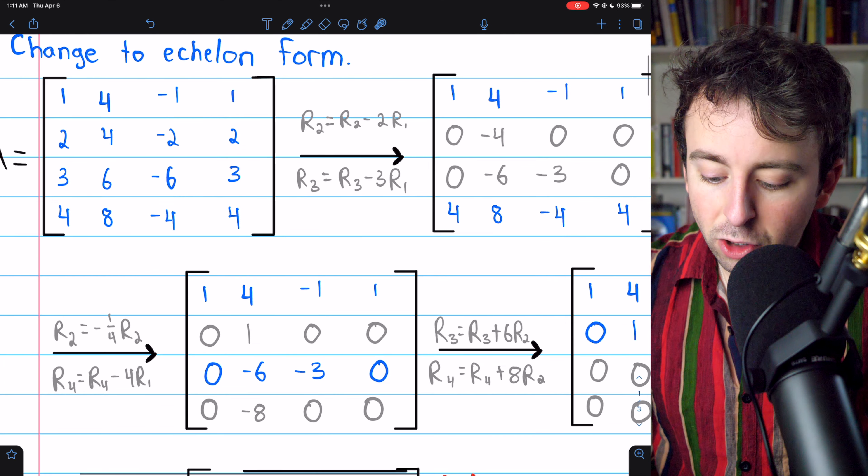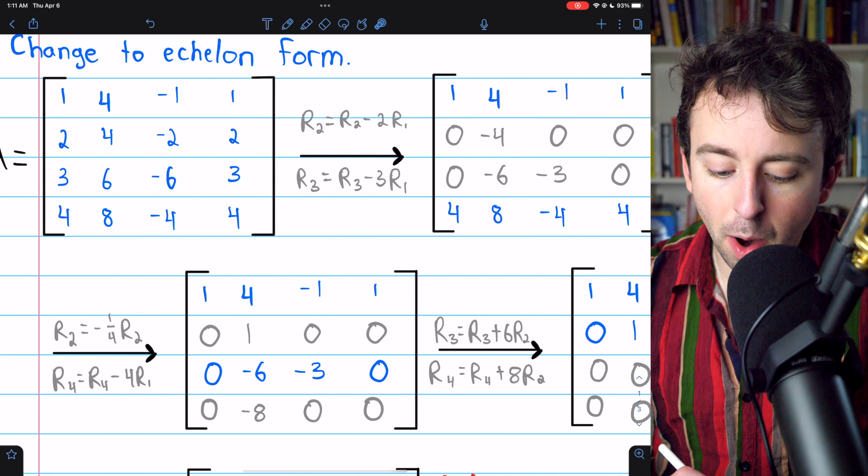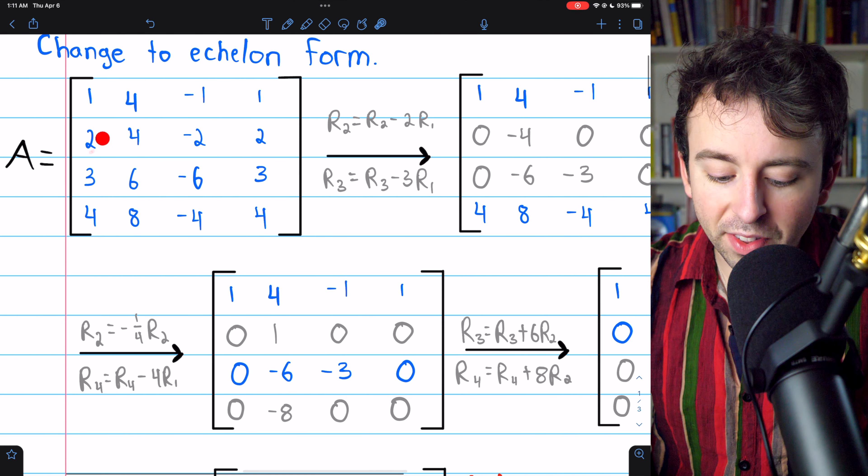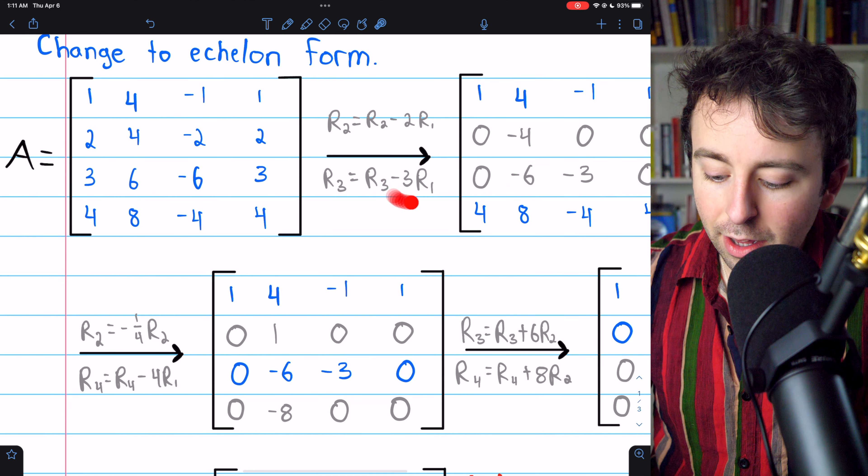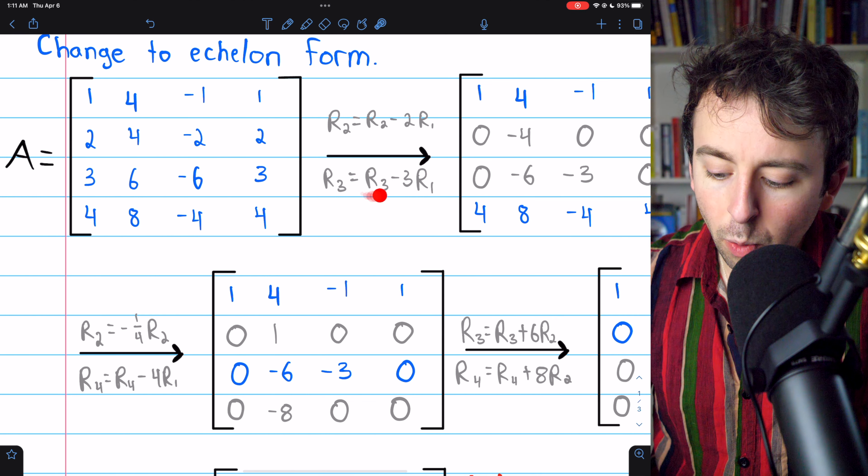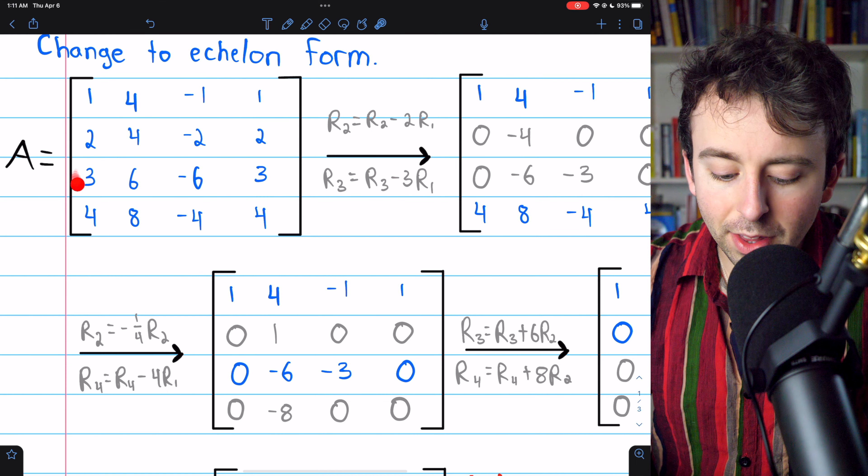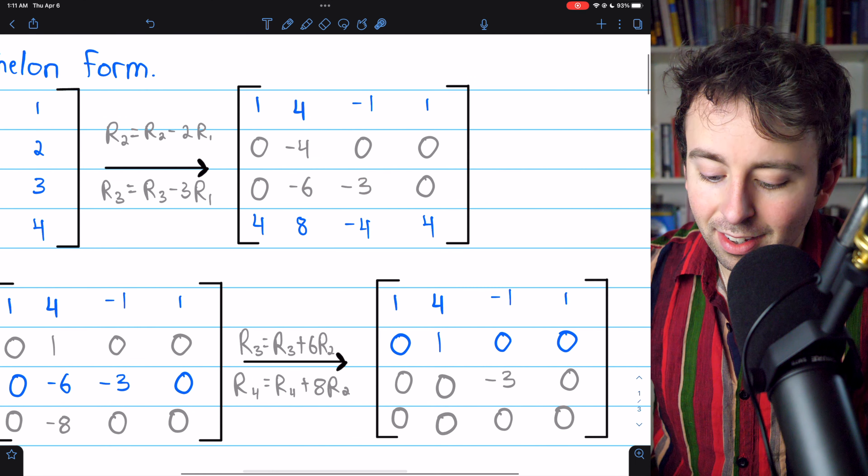First, we subtract two copies of row one from row two, which will get rid of this leading two. It'll turn that into a zero. Similarly, we take three copies of row one away from row three, which gets rid of this leading three, and that gets us here.